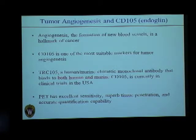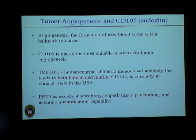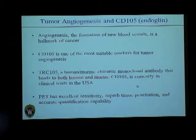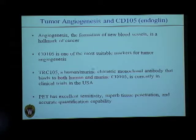The aspect of cancer that my project targets is angiogenesis, which is the formation of new blood vessels. This is very important for the initiation and progression of cancer. One of the proteins expressed mainly in vascular endothelial cells during angiogenesis in proliferating tumors is CD105, a transmembrane protein — and this will be our target.